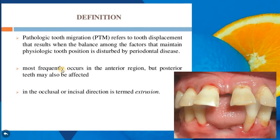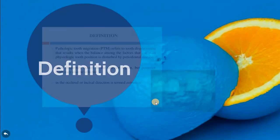In the occlusal or incisal direction, the migration is termed extrusion, like you see it here. There will be extruded teeth vertically — the tooth will vertically migrate.